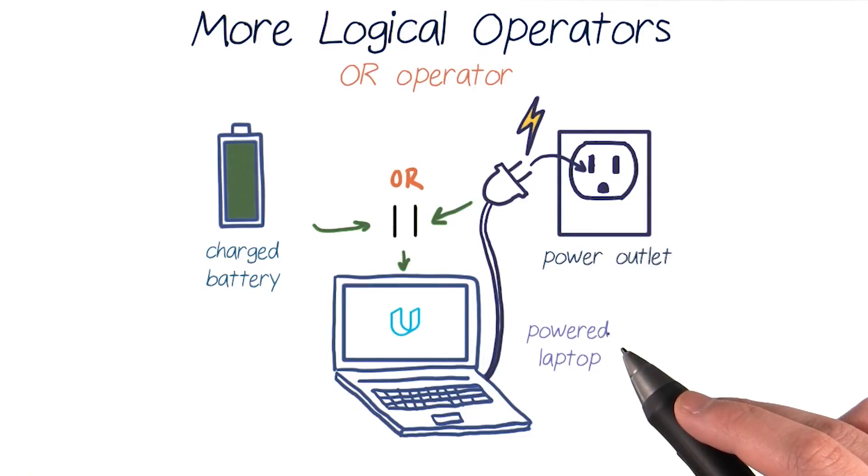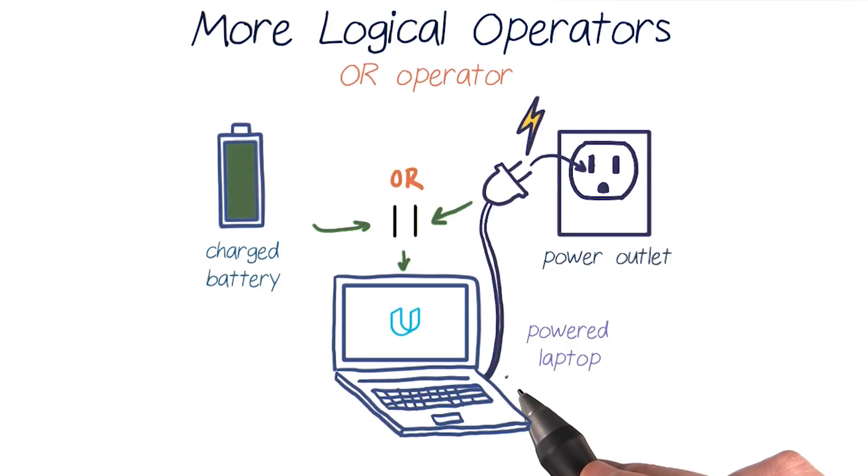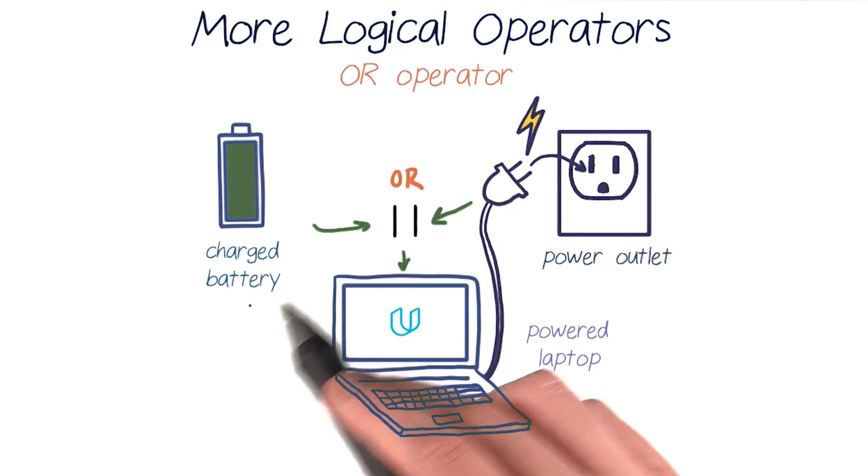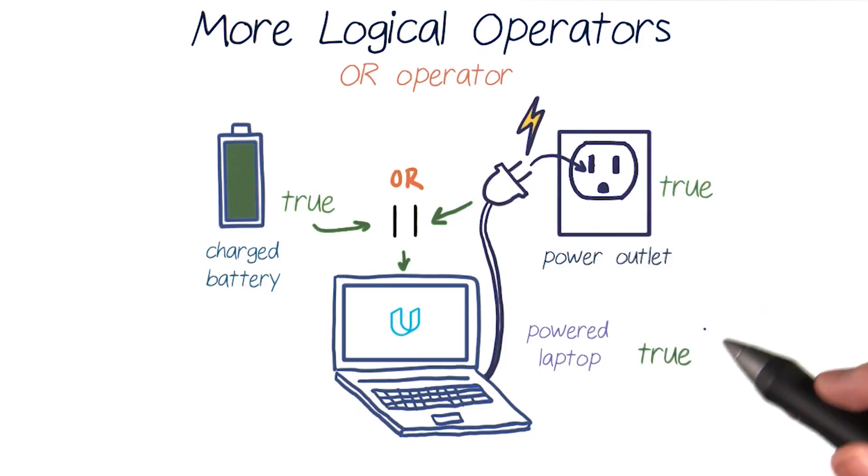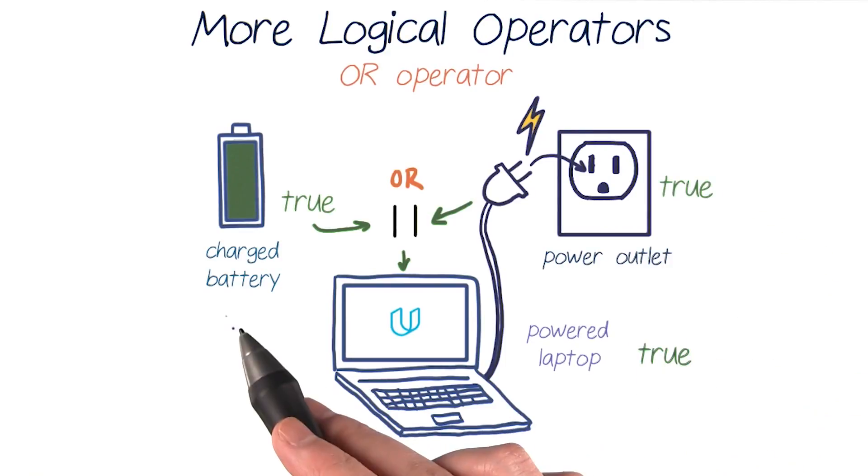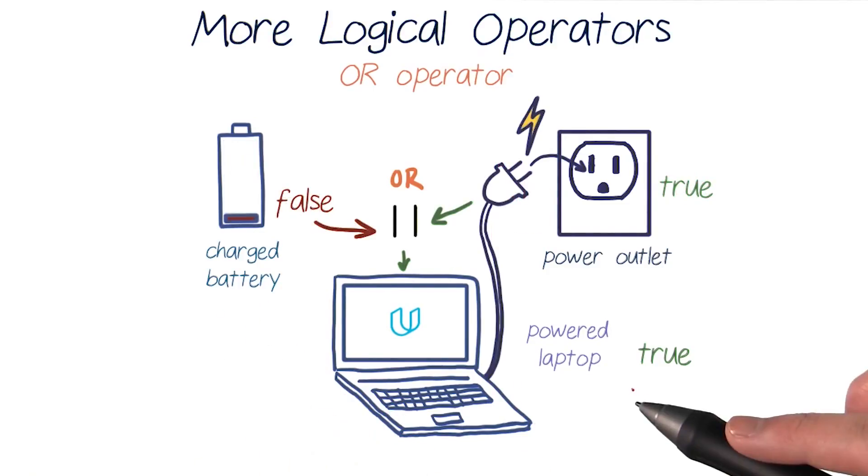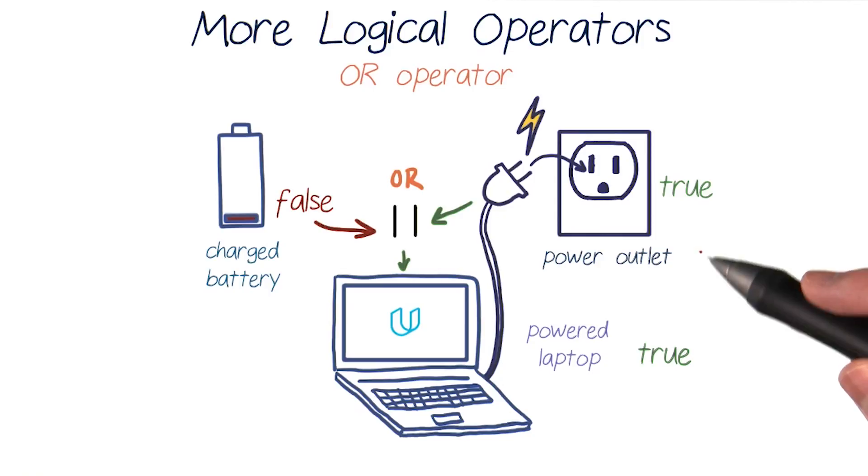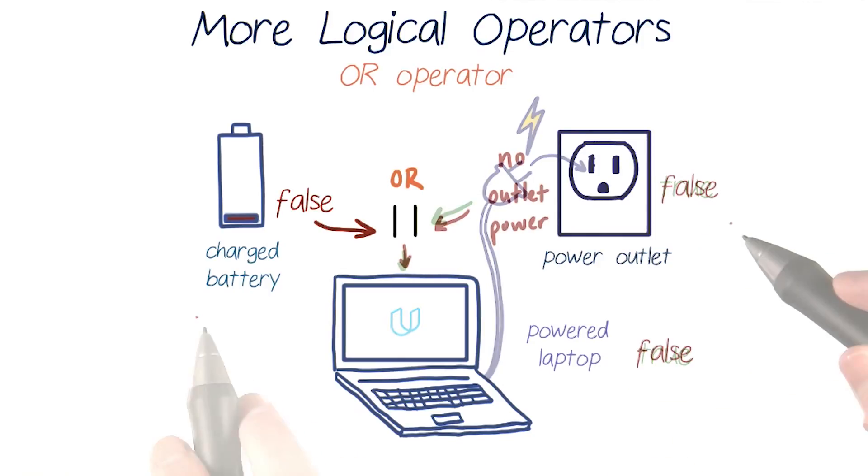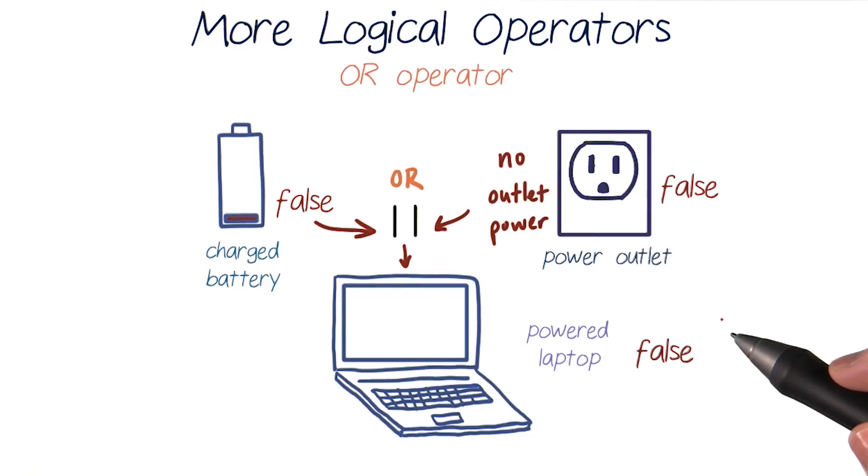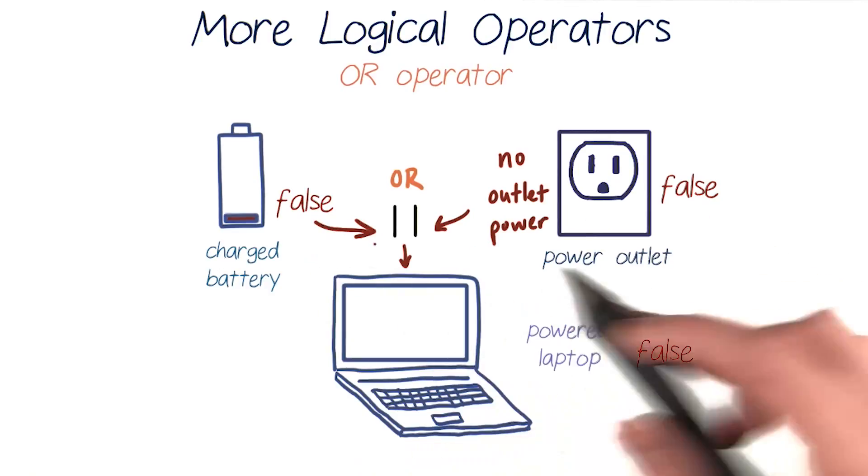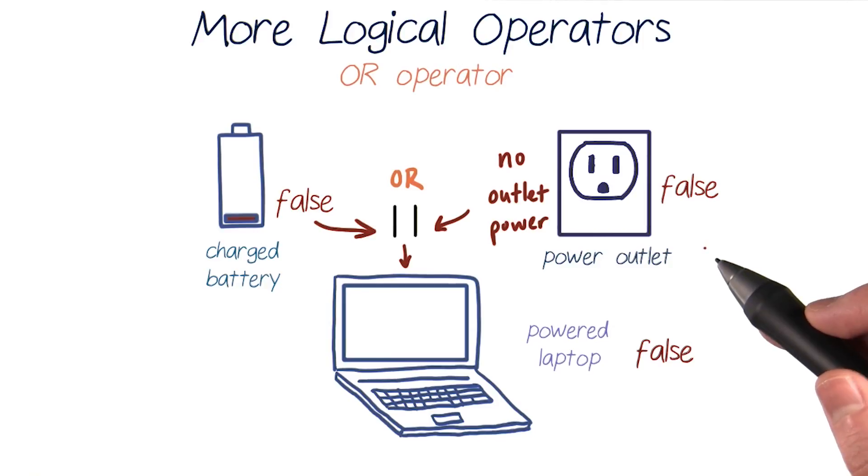To understand an or operator a little better, think about if you're trying to power and use your laptop. For your laptop to work, it needs to get power either from a charged battery or from a power outlet. If both of these conditions are true, if it has a charged battery and it's plugged into a power outlet, your laptop should work. Your laptop will also work if only one of the conditions is true, like if it's only working off of a charged battery, and it will also be powered if you're only using a power outlet but your battery isn't charged. The only time the laptop won't get any power and won't work is when both conditions are false, when it doesn't have access to a charged battery or a power outlet.